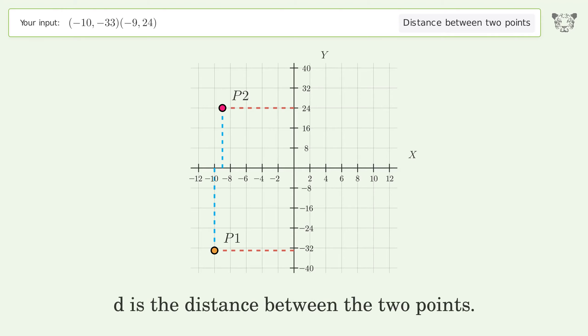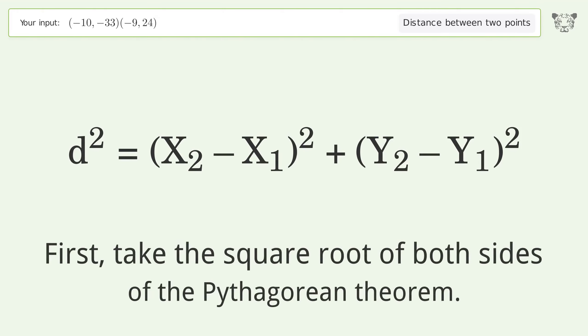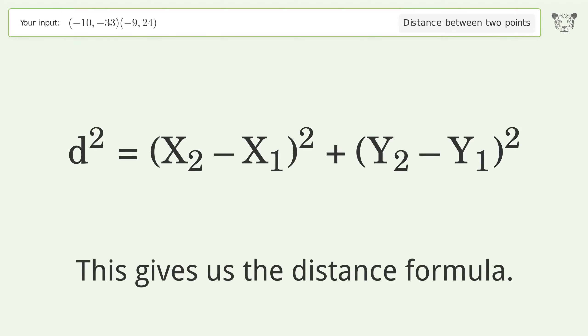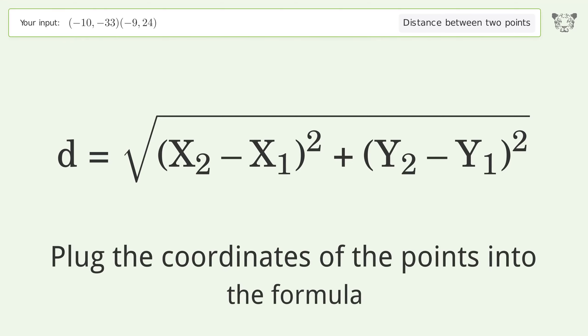d is the distance between the two points. First, take the square root of both sides of the Pythagorean theorem. This gives us the distance formula. Plug the coordinates of the points into the formula.